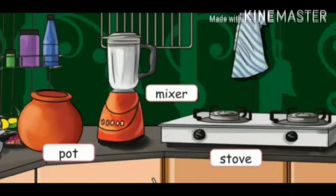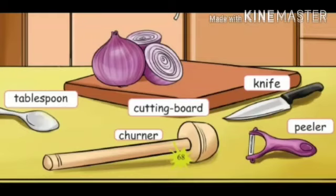Stove — stove is used to cook. Tablespoon — tablespoon is used to take something. Cutting board — cutting board is used to keep vegetables for cutting. Knife — knife is used for cutting.